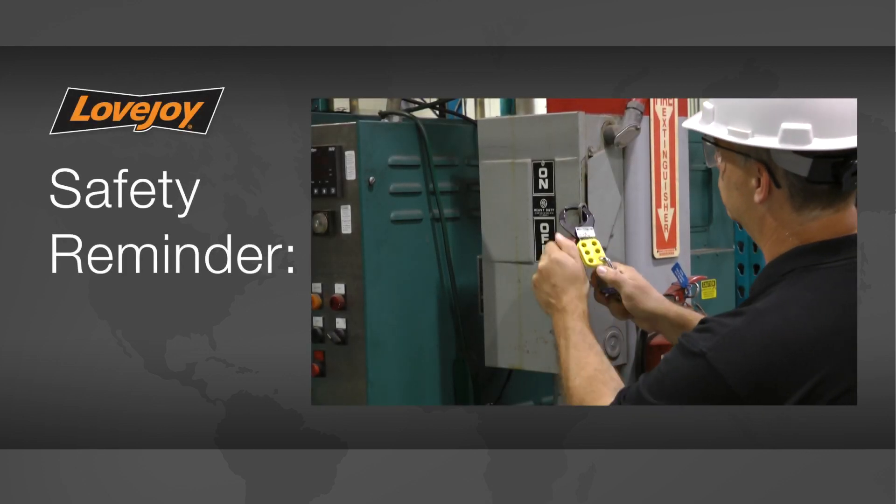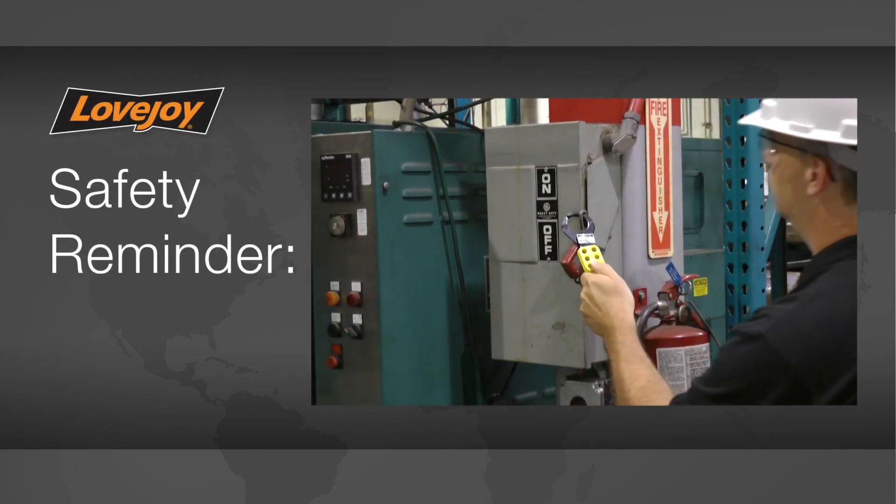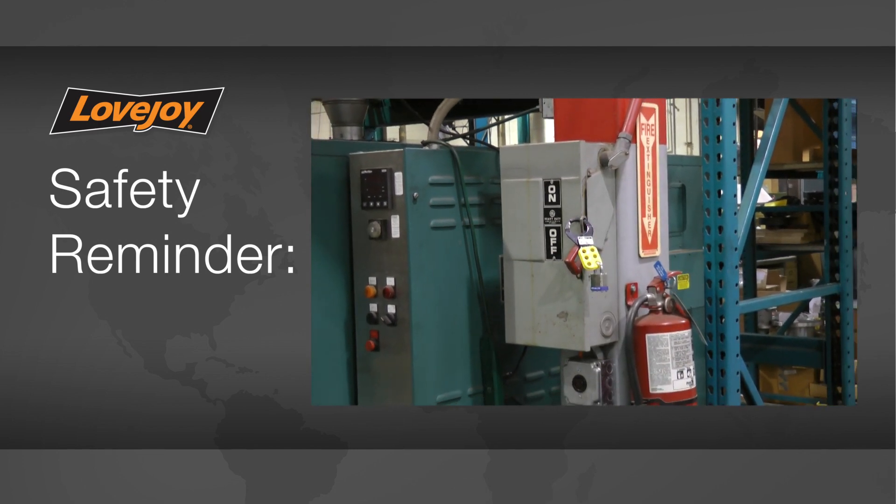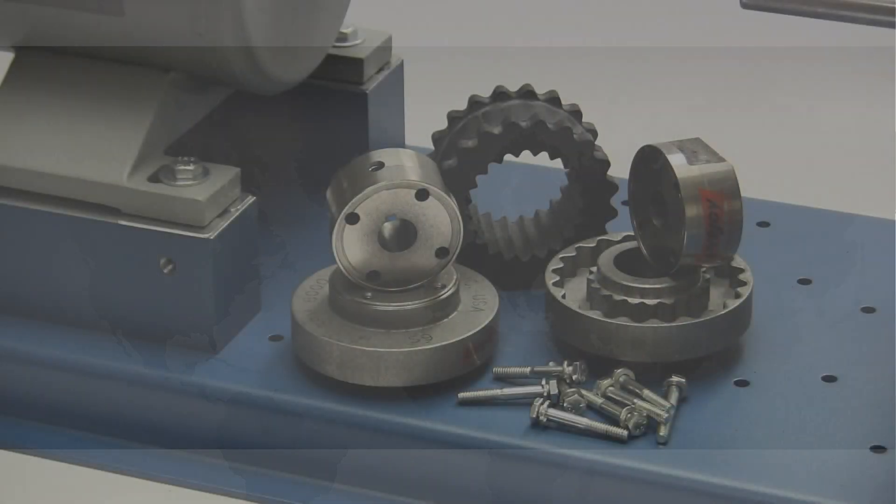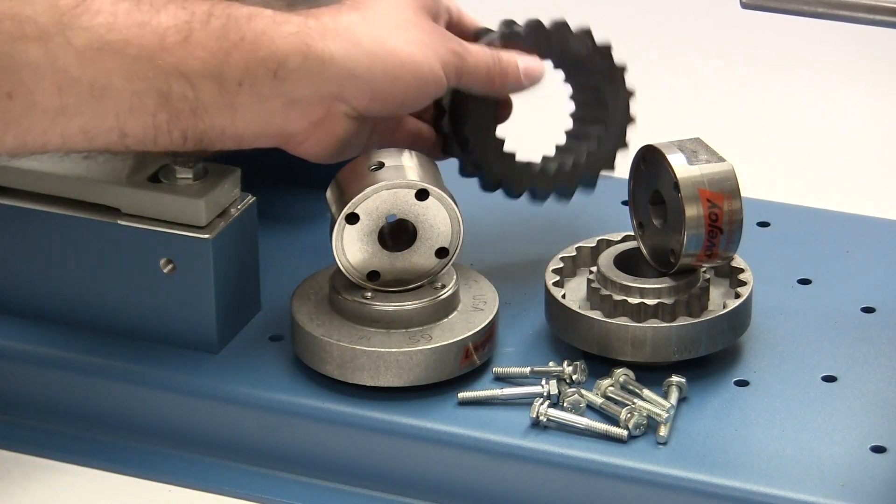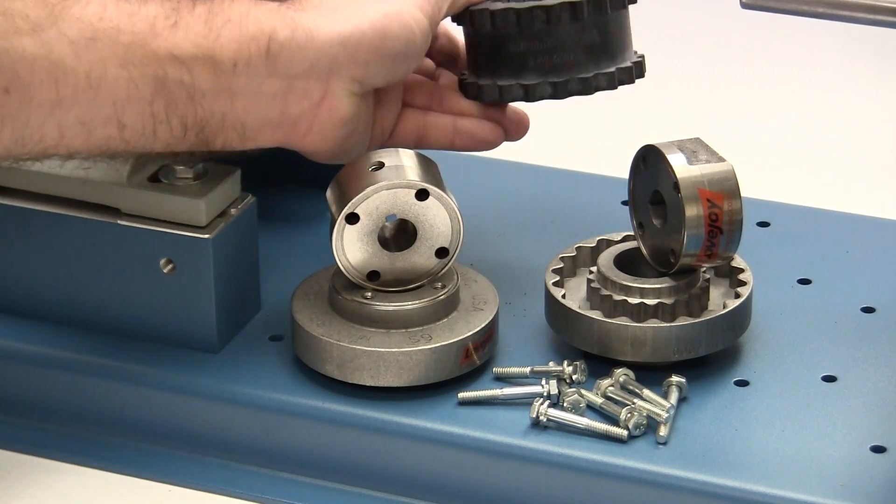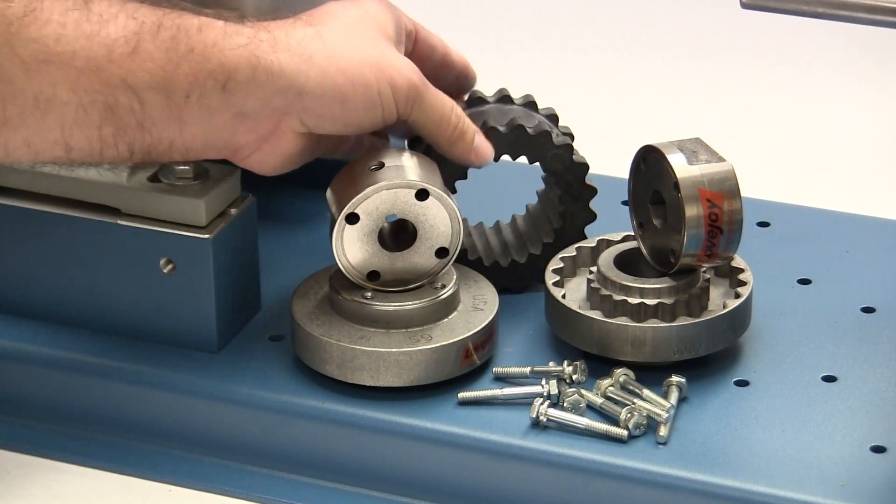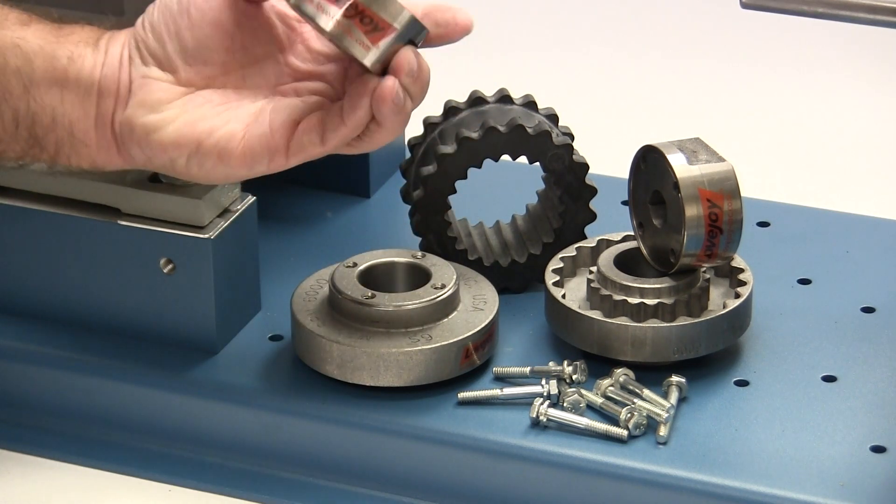Even though we have disconnected the power to this system, it is always a good idea to check and ensure that the power is off. When you receive the coupling, you should inspect each component to ensure that there are no visible defects, cracks, or damage from shipping.